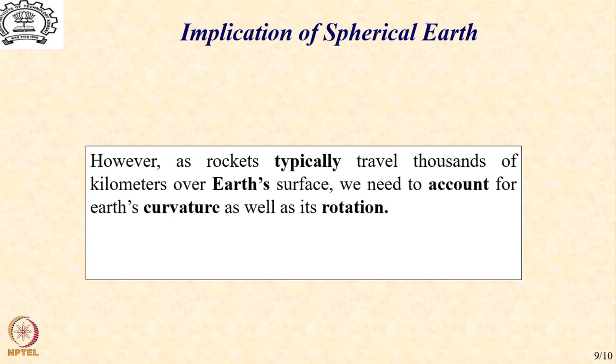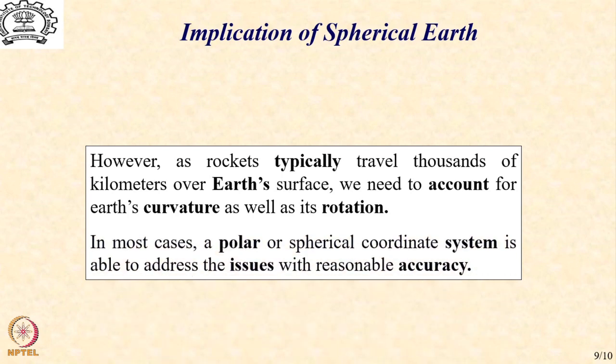We will need to take into account the earth's curvature and possibly its rotation about its own axis. One way of getting around this difficulty is to employ a polar or spherical coordinate system, which adequately addresses the issue of gravity vector direction but introduces additional complexities in the mathematical model. We have to deal with those depending upon the context in which we are putting the model.